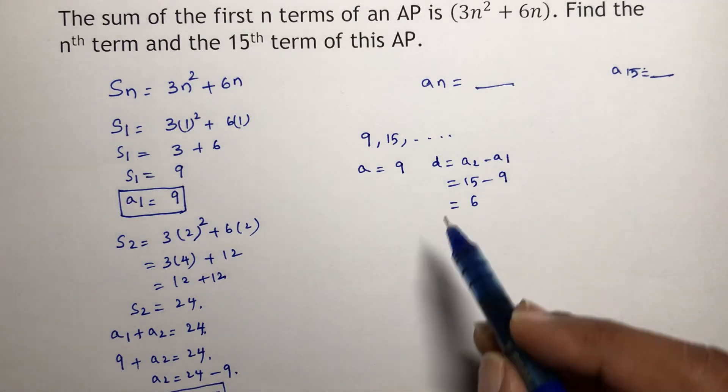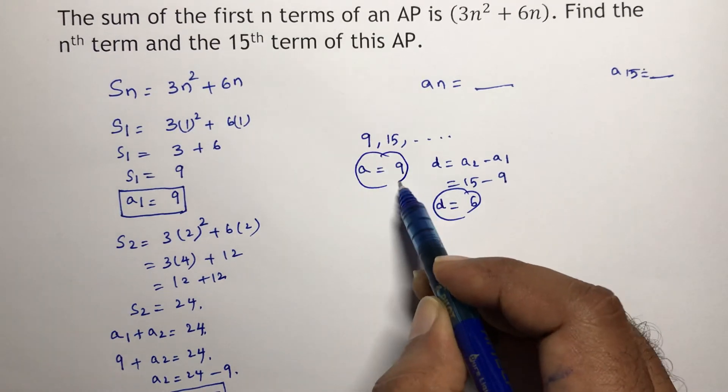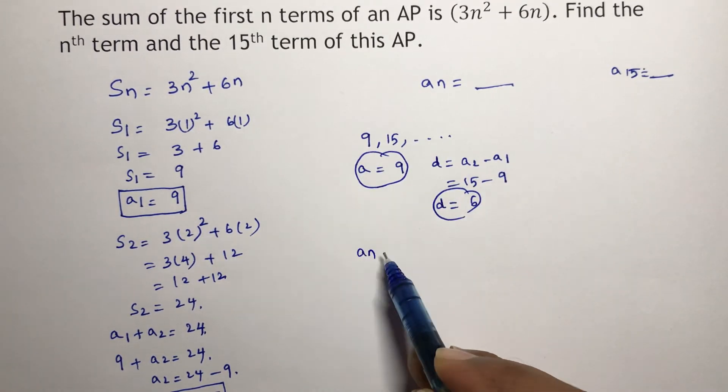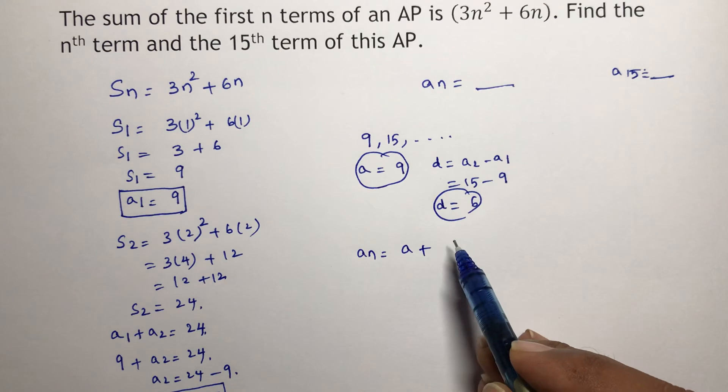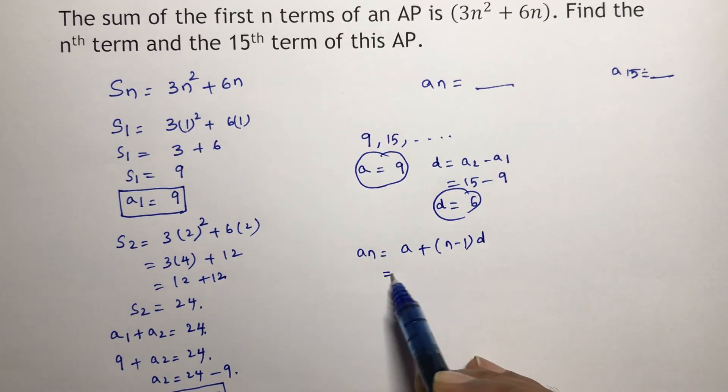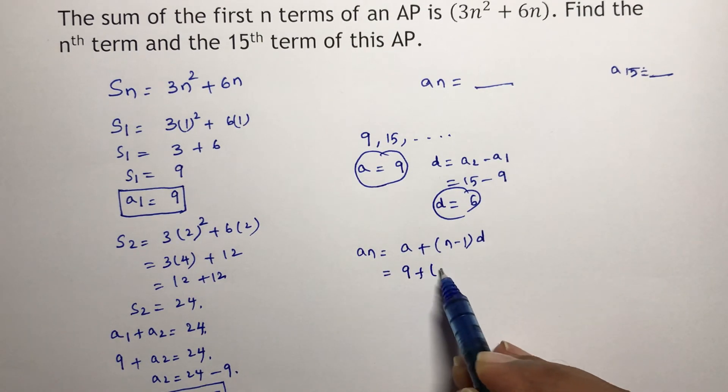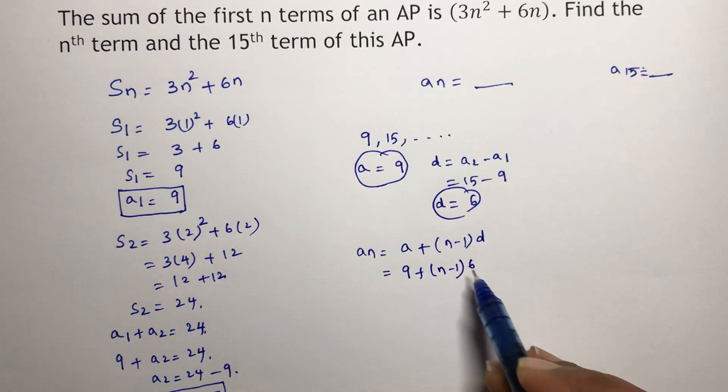So the common difference is 6 and the first term is 9. You need to find the nth term. So the nth term formula is A + (n - 1) × d. So here A is the first term, which is 9 plus (n - 1) into 6.